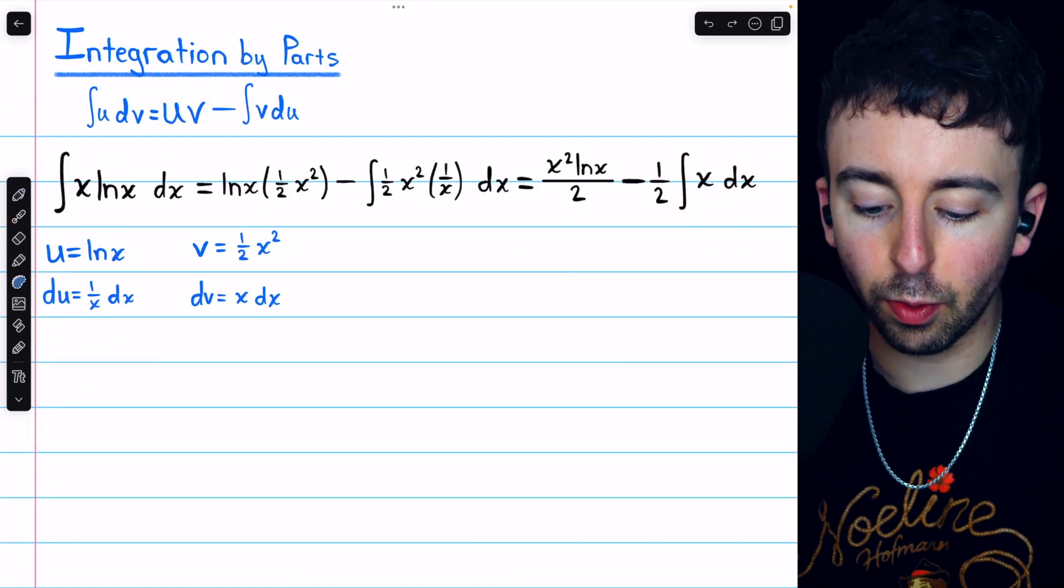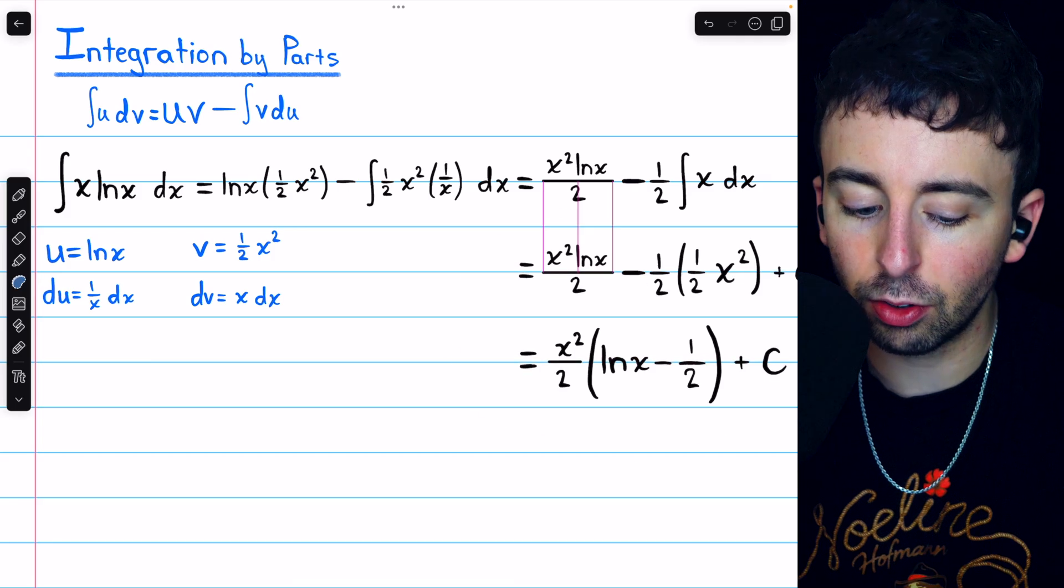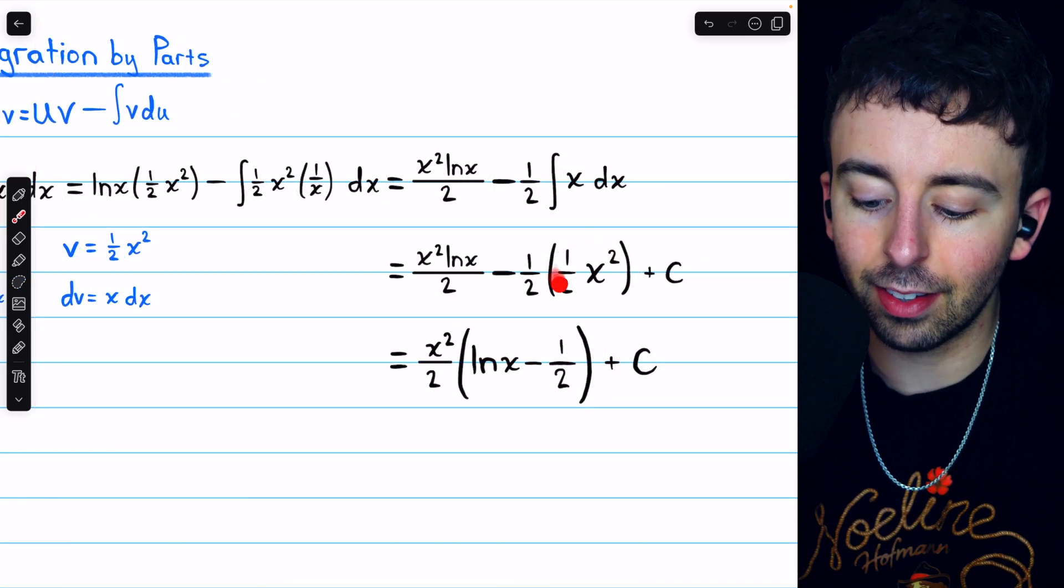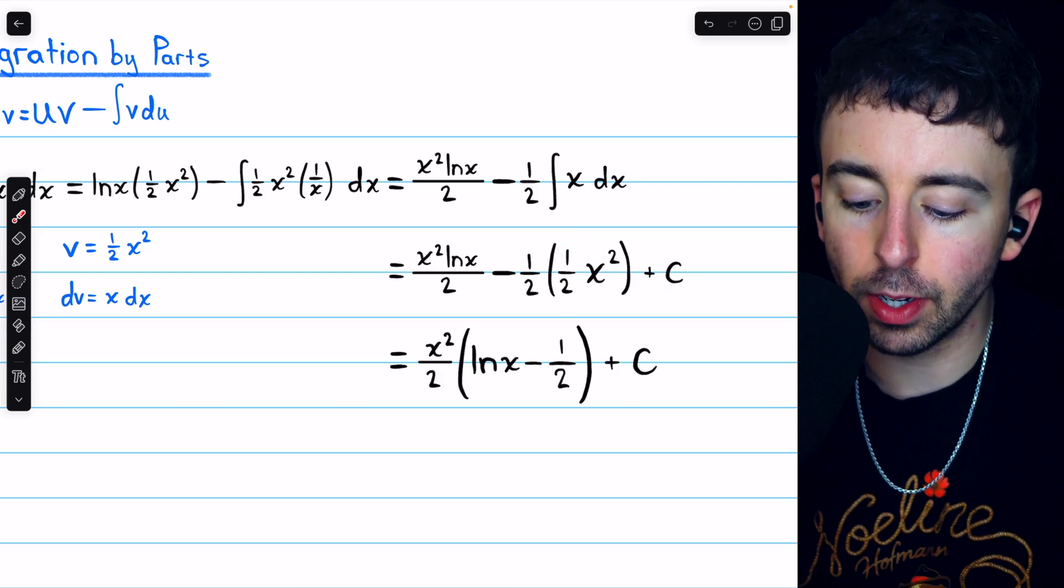And now, of course, this is a very straightforward integral. The integral of x is just 1 half x squared. So, from here to here, we just integrated x to replace that with 1 half x squared, and then, of course, we have to add that arbitrary constant.